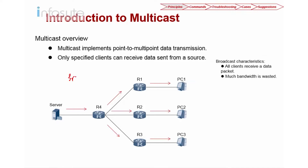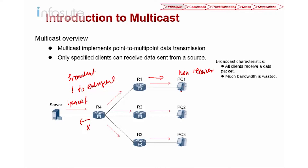Beside unicast, we have broadcast. Broadcast is one-to-everyone on the network. The server sends one packet, and R4 replicates it to all active interfaces except the one it came from, flooding it to the entire network. All routers that receive it flood it on another interface. So regardless of whether PC1 is a non-receiver, you are forced to receive and eventually drop the packet. The characteristic of broadcast is that all clients receive the data packet whether they want it or not, and much of the bandwidth is wasted.